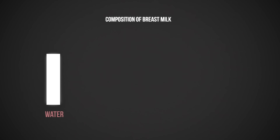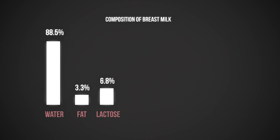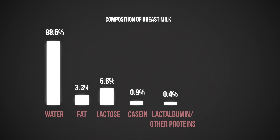What is the composition of breast milk? Human milk is about 88.5% water, 3.3% fat, 6.8% lactose — which is the main carbohydrate in milk — 0.9% casein (the main protein), 0.4% lactalbumin and other proteins, and 0.2% ash, which is the minerals such as calcium.